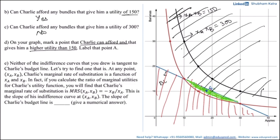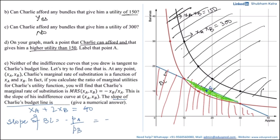The slope of Charlie's budget line needs to be found numerically. From the previous part, the budget line had the equation xa plus 2xb equal to 40. The slope of the budget line is the ratio of prices: the price of apple divided by the price of bananas. The price of apple is 1 and the price of bananas is 2, so the slope of the budget line is minus one divided by two.